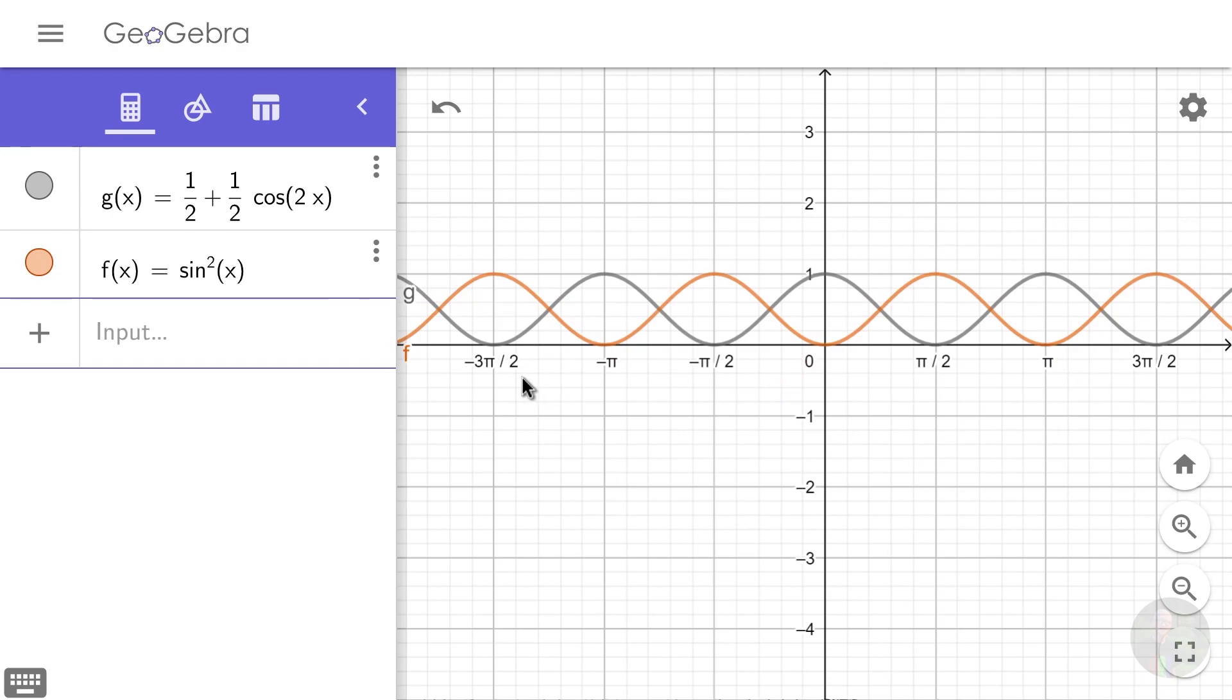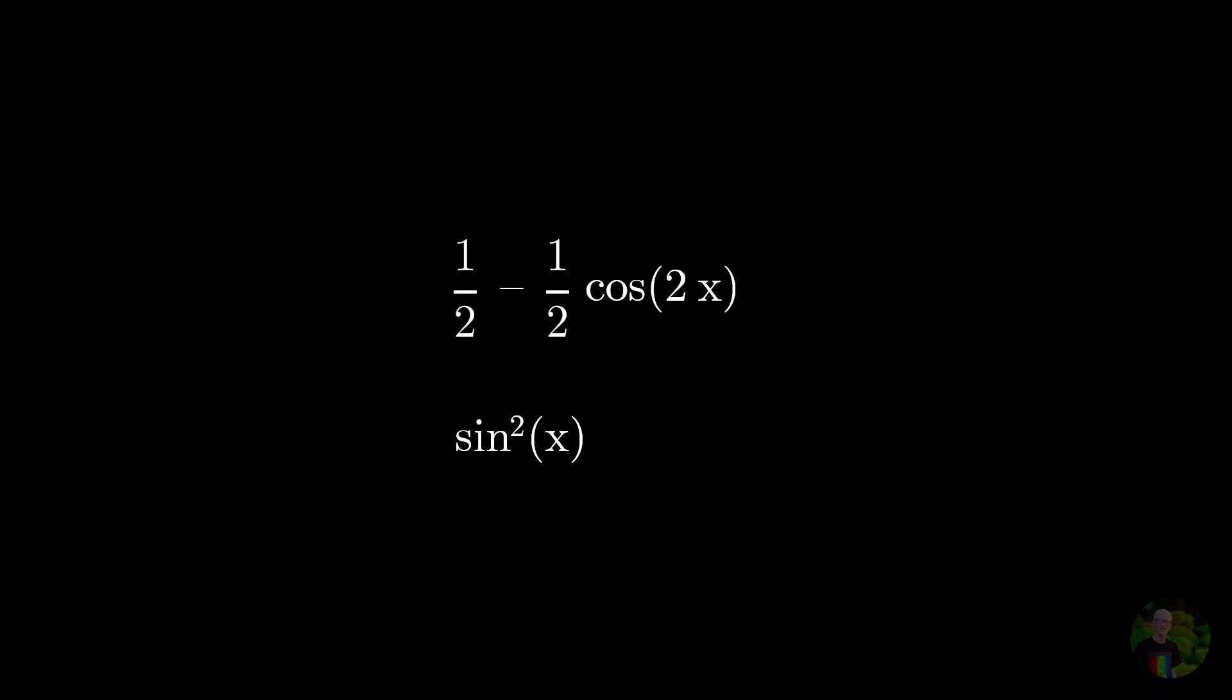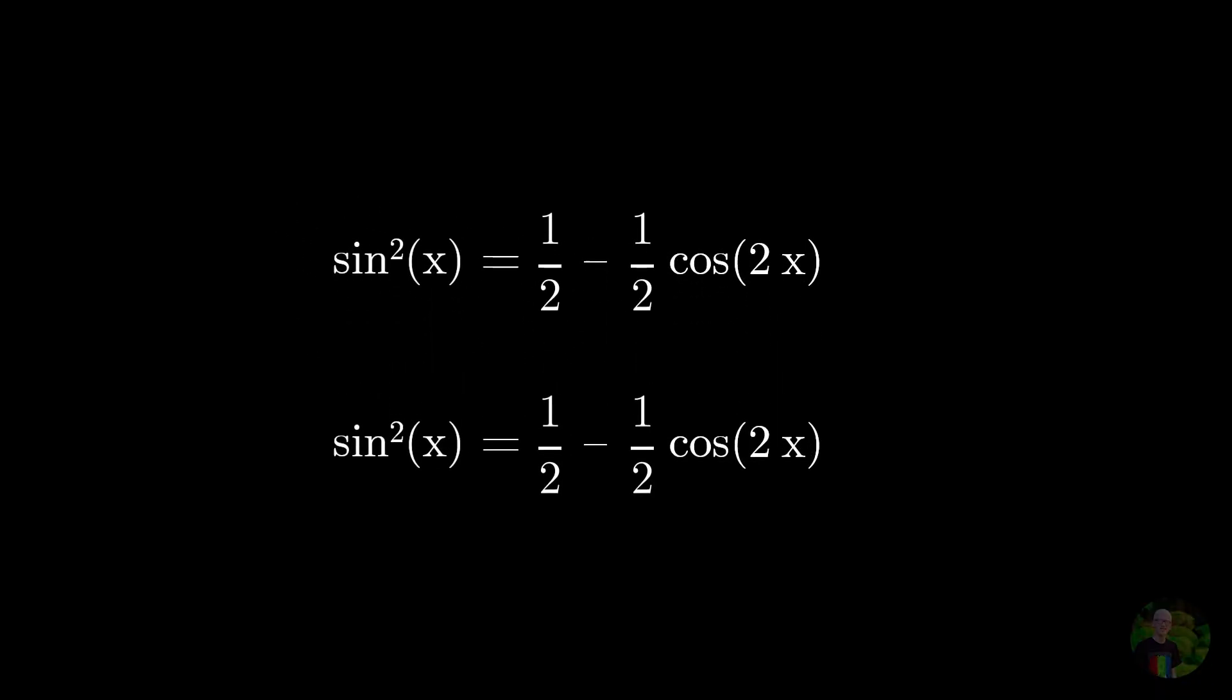And previously, we had flipped the cosine function by adding a negative sign before it, so let's do the same, and there you go! They are equal. We verified this one as well, and if we move few things here and there, we will get that cos 2a is equal to 1 minus 2 sin squared a. Awesome!